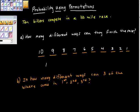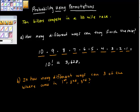How many ways could they finish? They could finish ten factorial — ten factorial means ten times nine times eight times seven times six times five times four times three times two times one. Your calculator has a button for that, probably under the probability section. Ten factorial happens to be 3,628,800.